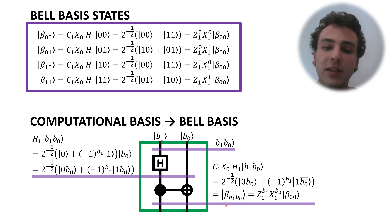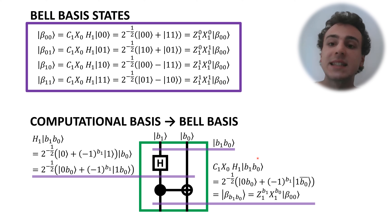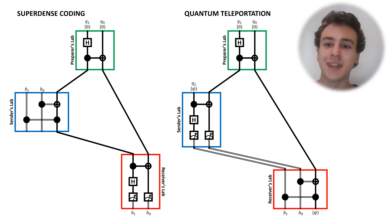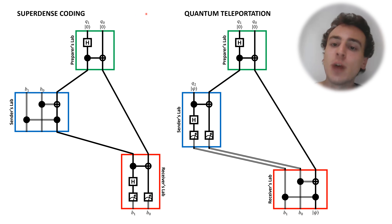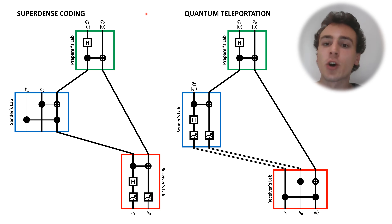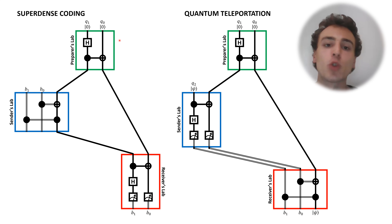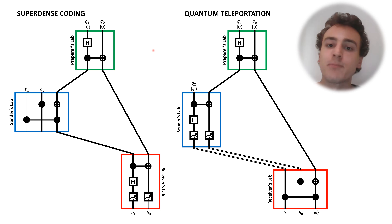Now that we've introduced this general notation, we're going to use it in the subroutines of both superdense coding and quantum teleportation. Here we have a side-by-side visualization of both protocols. Both can be subdivided into three subroutines called preparation, sending, and receiving. The preparation subroutine is performed in the preparer's lab and is shown in these green boxes. Observe that the preparation subroutine is identical for both protocols — they both begin with the same preparation procedure.